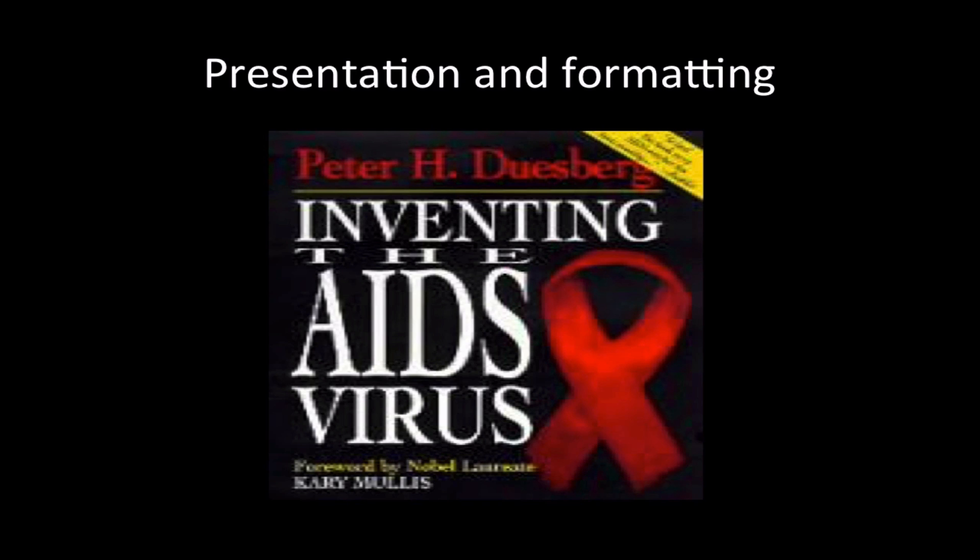"Inventing the AIDS Virus" by Peter Duesberg. This is a book I read about three years ago. I wasn't really aware of what he was talking about or the context it was written in, but I had seen Kary Mullis give a foreword to it, and I really liked Kary Mullis's brain in general. So I figured I'd do a book review on it.